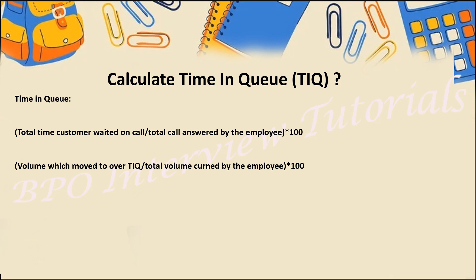Now the formula. You need to gauge where volumes are not getting crunched on time. The formula is very easy: number of calls which moved to Over TIQ divided by total calls answered, multiplied by 100 to get the percentage. For data entry processes: volume breaching SLA or moving to Over TIQ divided by total volume churned out by the employee, multiplied by 100. Both formulas are the same in structure — how you present and describe it in front of your manager will lead to the actual solution.